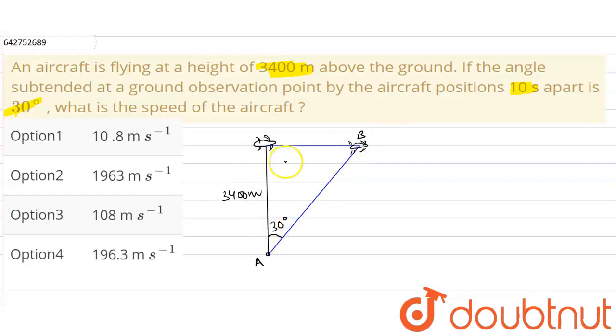So the plane from point C to point B goes in 10 seconds. Now this distance BC will be tan 30 into 3400, correct.